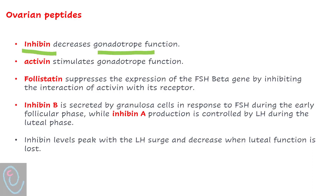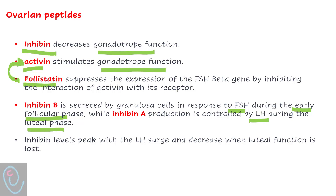The ovary also produces peptide hormones. Inhibin decreases gonadotropin function. Activin stimulates gonadotropin function. Follistatin decreases gonadotropin function indirectly by inhibiting activin. Inhibin B is secreted in response to FSH during the early follicular phase, while inhibin A is controlled by LH during the luteal phase.